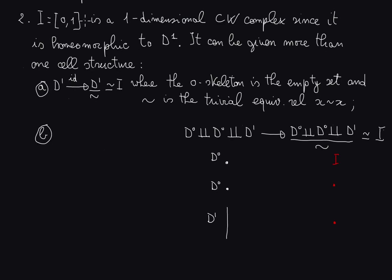The second easiest example is probably the unit interval. It is a one-dimensional CW complex. The dimension of a CW complex is the highest dimension of the cells that compose it, or equivalently, the highest dimension of the unit disks we use to make the CW complex. Since the unit interval is homeomorphic to D1, it is certainly a one-dimensional CW complex.